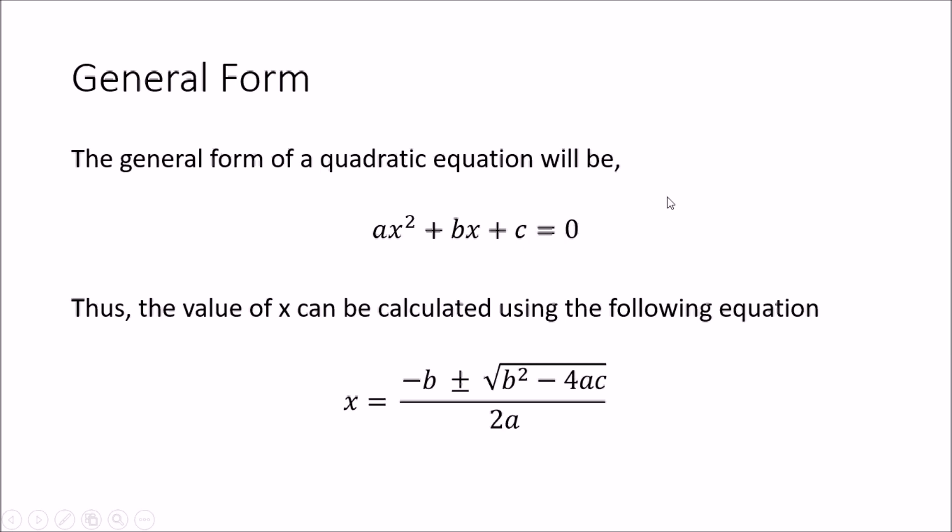By separating these coefficients into this equation we can easily find the x value. In a quadratic equation you will get two answers, obtained by this equation. Here you can see there is this plus or minus sign that means there are two answers. One answer will be the plus value and the other answer will be the minus value.